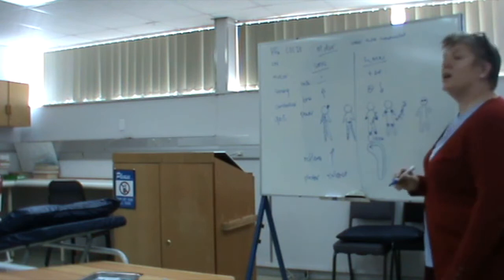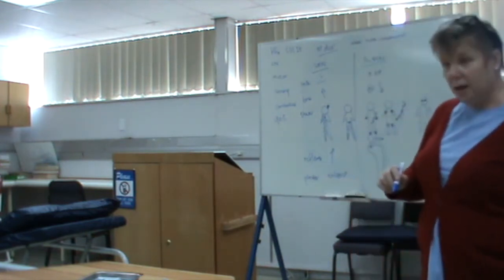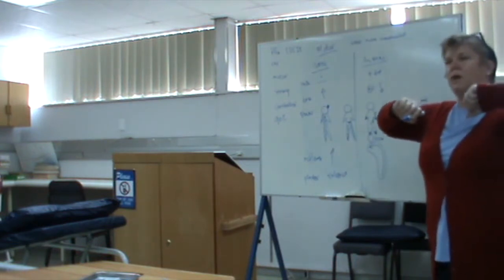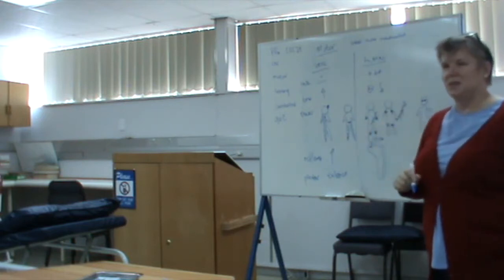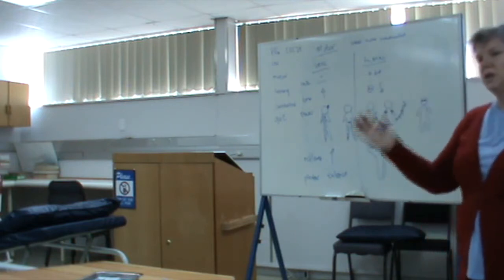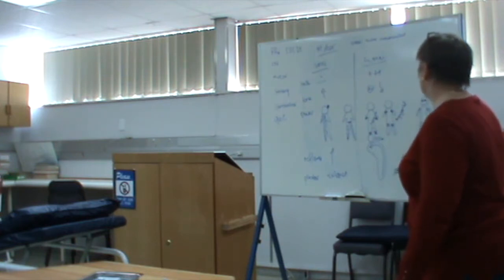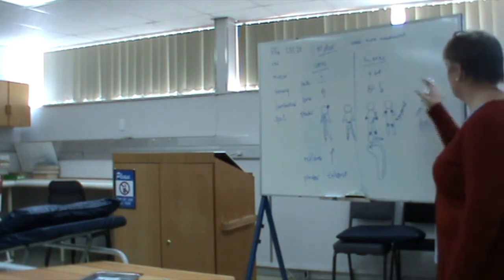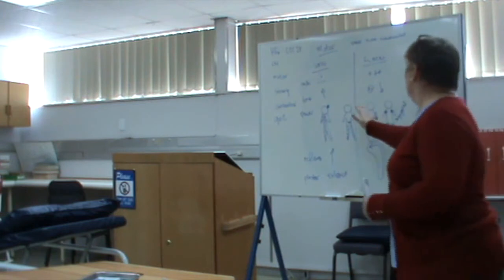If you examine a Myasthenia Gravis patient and do neck flexion repeatedly, they will fatigue. If longstanding, they may also have proximal weakness. But 90% have eye signs — either in the history or on examination. That is a lower motor neuron pattern — low tone, rapid atrophy in neuropathy, with proximal or distal distribution or fatigability.